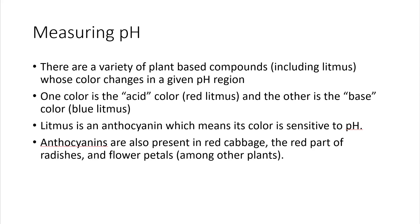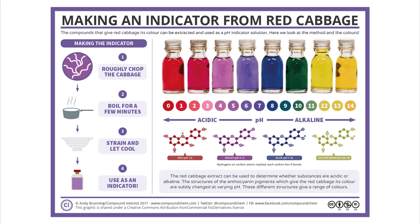Measuring pH: there are a variety of plant-based compounds, including litmus, whose color changes in a given pH region. One color is the acid color — red for litmus — and the other is the base color, blue, for litmus. Litmus is an anthocyanin, which means its color is sensitive to pH. Anthocyanins are also present in red cabbage, the red part of radishes, and flower petals, among other plants. This infographic shows you how to make red cabbage juice, which you've already done in class, and the resulting colors as a function of pH. While universal indicator is expensive, red cabbage juice is easy to make, and red cabbage is usually readily available year round.